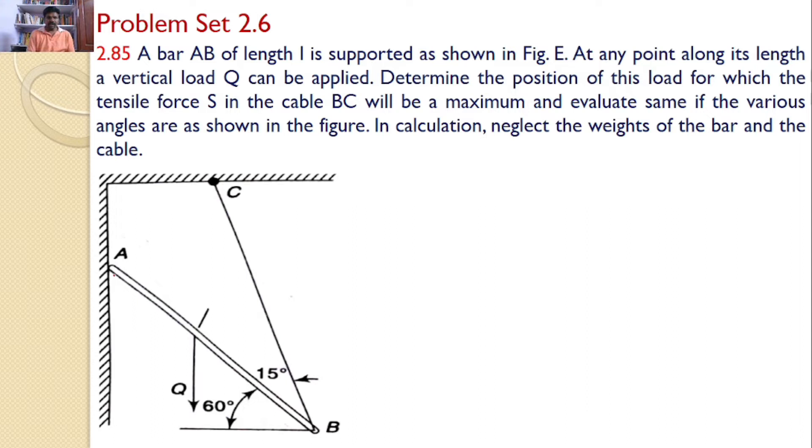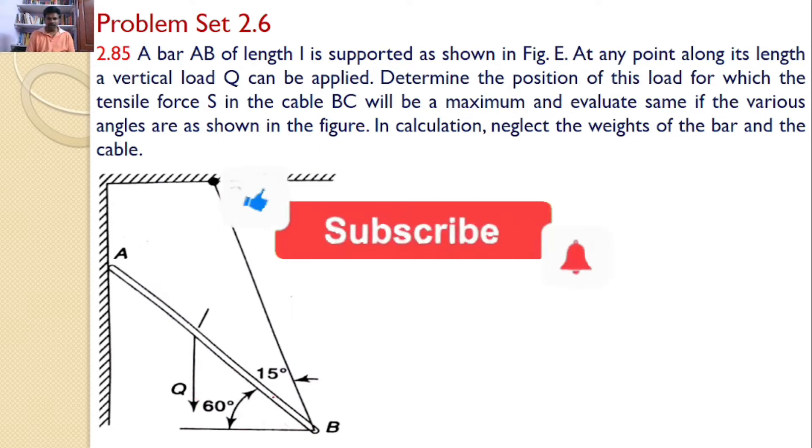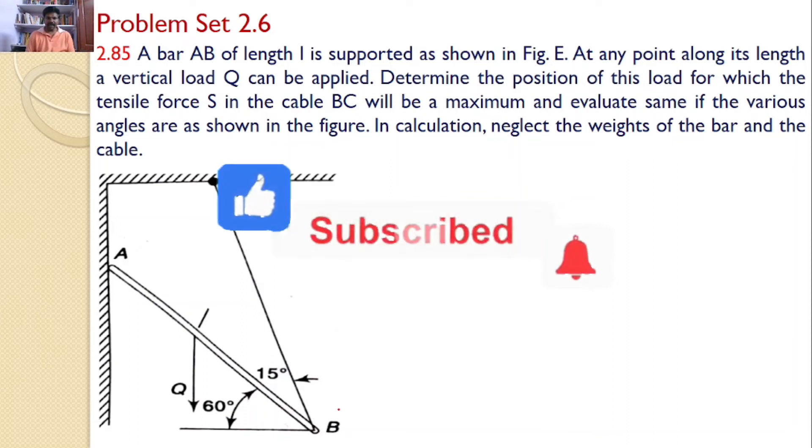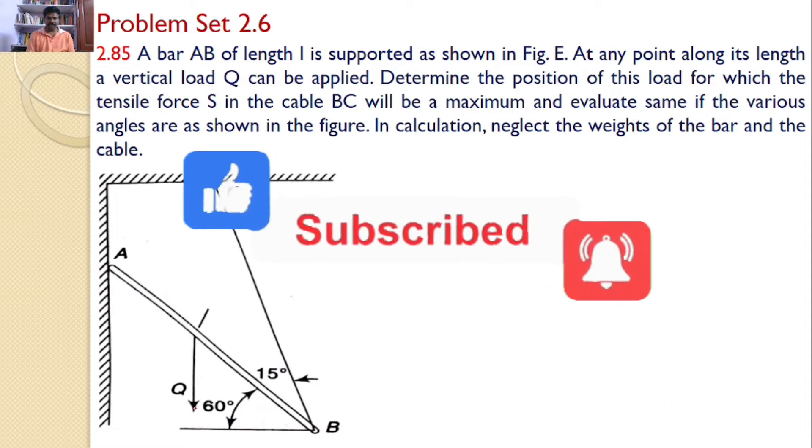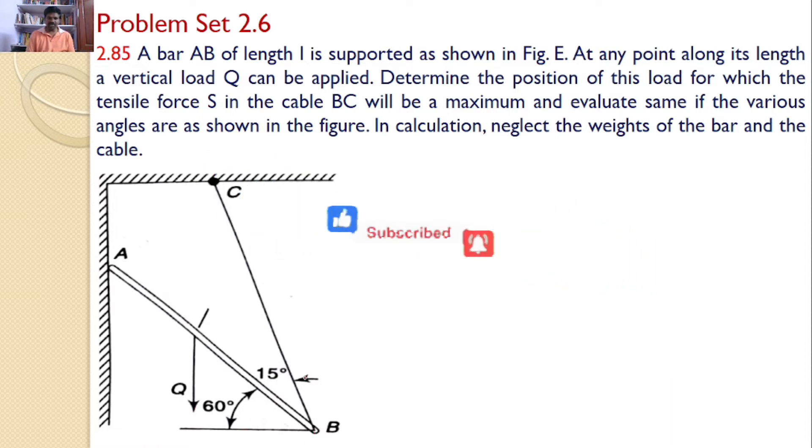That means a bar AB is supported like this. At A I can find a hinged support and at B it is tied with another cable BC. Q is applied at somewhere on the bar AB. Our interest is to find where this Q is to be supported in such a way that the force in BC is maximum.